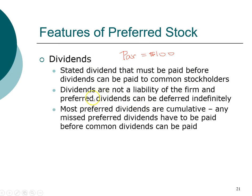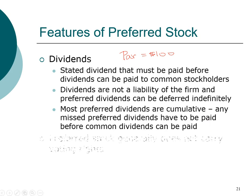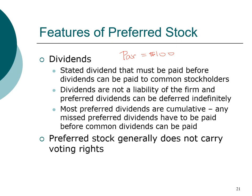Even though dividends are not a liability, preferred stock is often cumulative, meaning that if a company misses a payment on the preferred dividend, they have to make up and pay all the back dividends before any common stock dividend can be paid. Another important characteristic of preferred stock is that it typically doesn't carry any voting rights, with exceptions — for example, if dividends fail to be paid for a certain number of years, preferred stockholders may get to vote, as a clause to protect preferred stockholders.